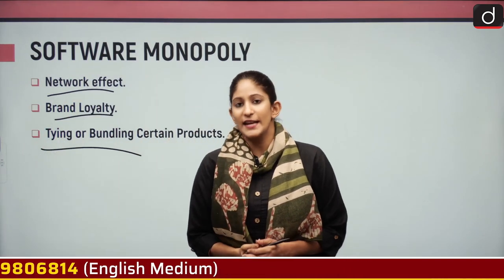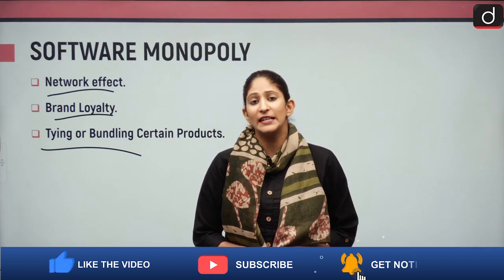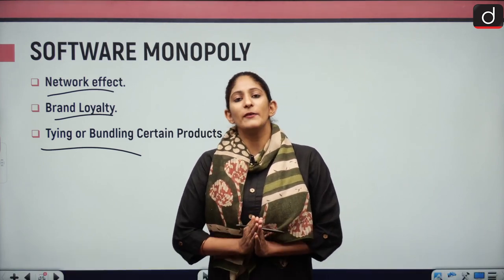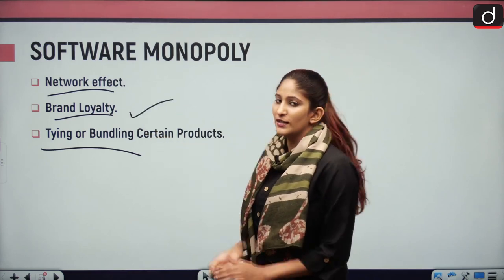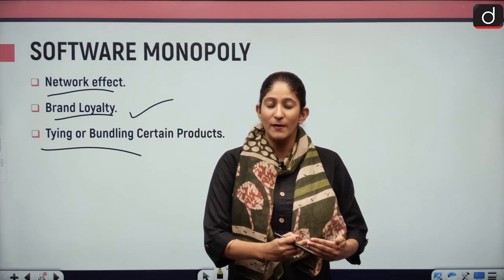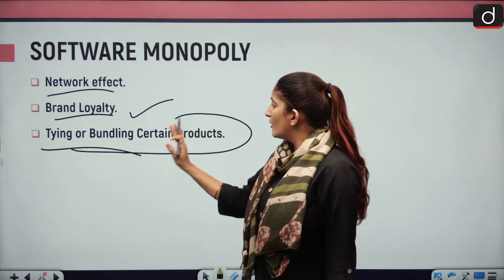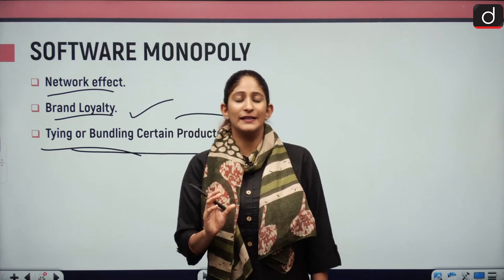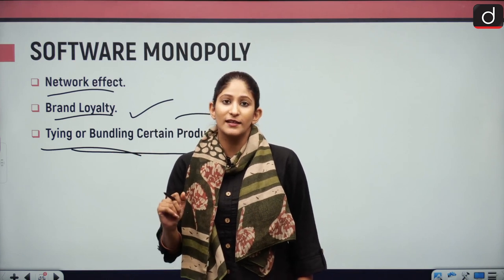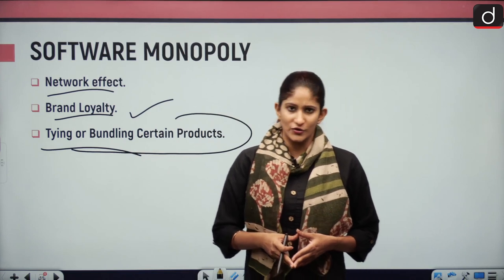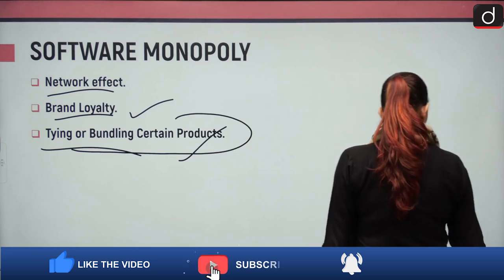Software monopoly is maintained through several mechanisms. First, the network effect — apps like WhatsApp have such strong network capabilities that even with substitutes like Telegram or Signal, people continue to use them. Second is brand loyalty — a sync built into devices based on people's choices. Third is the bundling of products, and fourth is exclusionary contracts with manufacturers, offering remuneration in exchange for pre-installing their apps on devices.